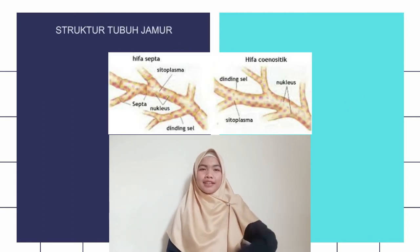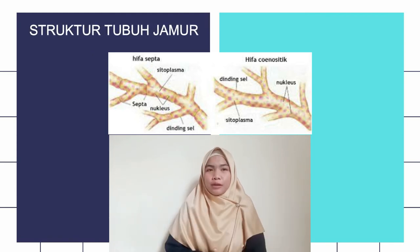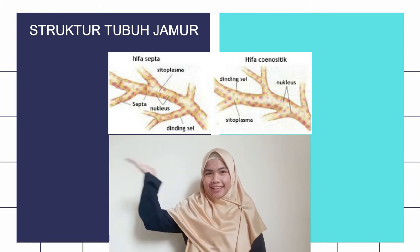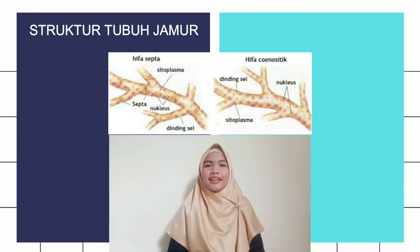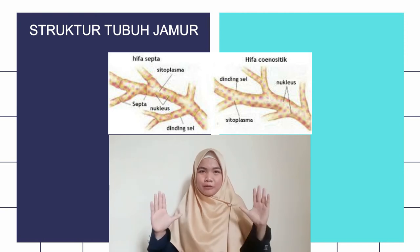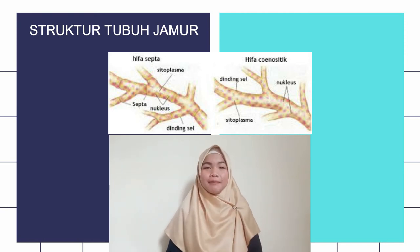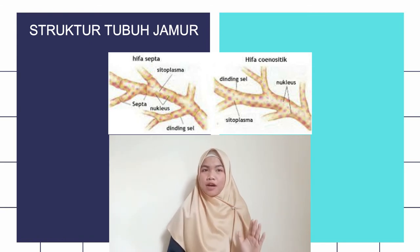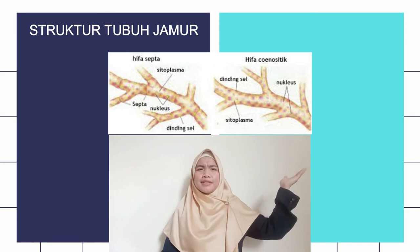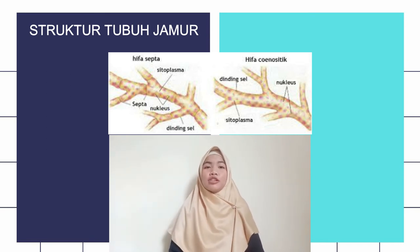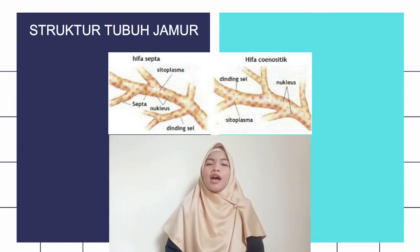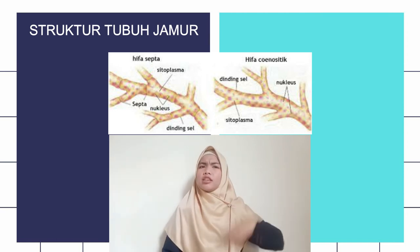Sekarang kita masuk ke karakteristik yang keempat, yaitu tubuh jamur tersusun atas benang halus yang dinamakan hifa. Kalian pernah dengar hifa itu apa? Pada tubuh jamur terdapat benang halus, dan benang halus tersebut dinamakan hifa. Kalau kumpulan benang-benang halus bisa kita sebut dengan miselium. Miselium adalah kumpulan dari beberapa hifa. Untuk hifa sendiri terdapat dua jenis: ada hifa yang bersekat dan ada hifa yang tidak bersekat. Hifa yang bersekat kita sebut dengan septa, dan hifa yang tidak bersekat kita sebut dengan koenositik.